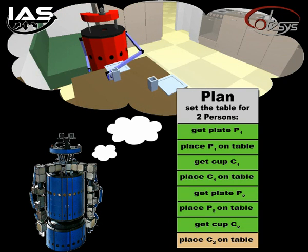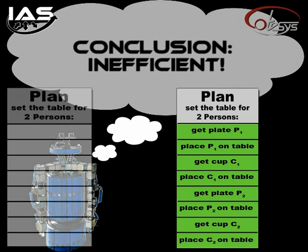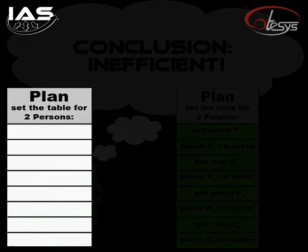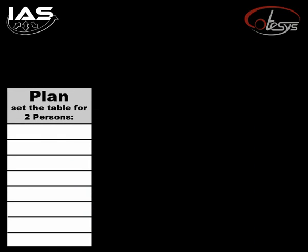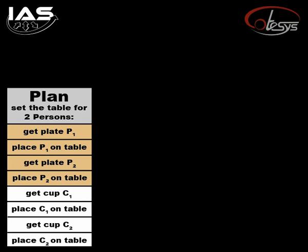If the conclusion is that the plan is inefficient, an optimization routine is called to improve the plan by first changing the execution order of its sub-plans. So we first get the two plates and place them on the table, then the two cups are arranged in the same way. What we get is a logical arrangement of the sub-instructions: the plates, and the cups.